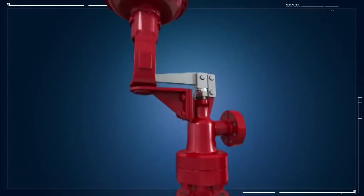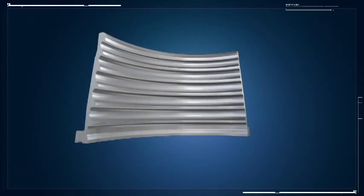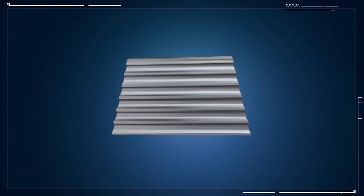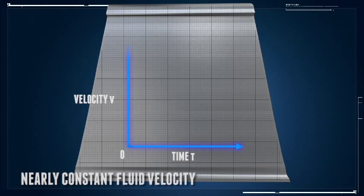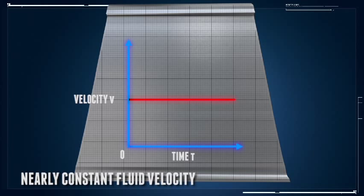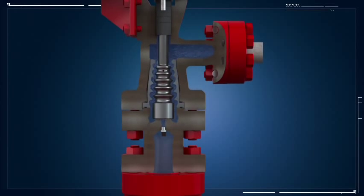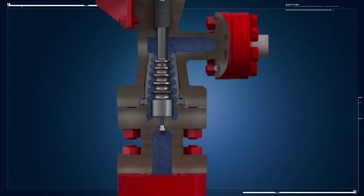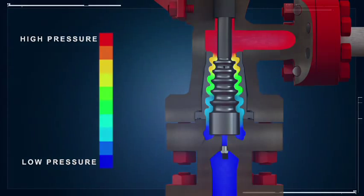The flow area of the valve trim is gradually increased towards the downstream section. This compensates for expansion of gas with a drop in pressure and ensures a nearly constant fluid velocity throughout the throttling process. By reducing fluid velocity, the 77000 series advanced design eliminates the damaging erosive effects, high kinetic energy spikes and vibration.